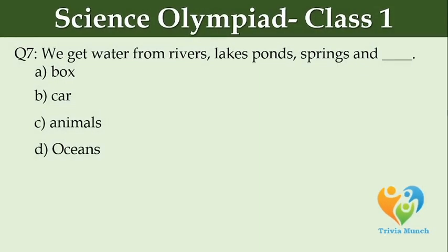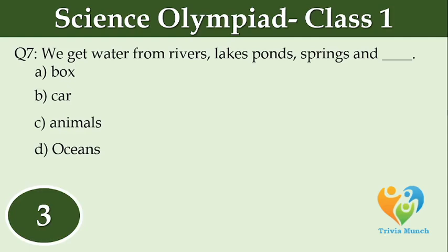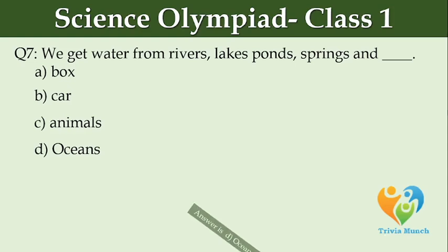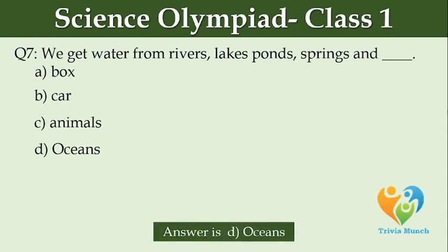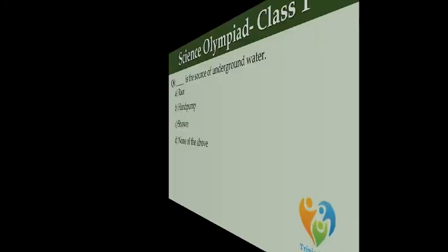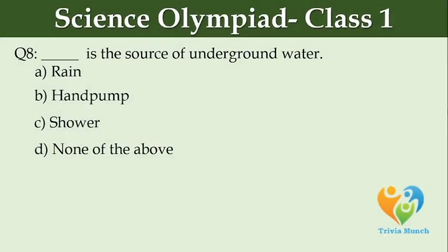We get water from rivers, lakes, ponds, springs, and dash. Option A: Box. Option B: Car. Option C: Animals. Option D: Oceans.